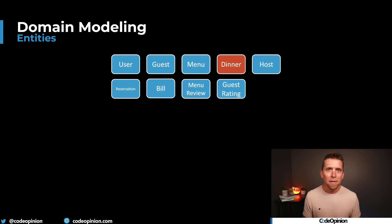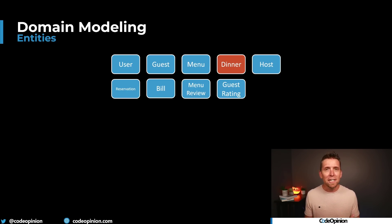Looking back at all these entities and thinking about what the actual behaviors of this system are, I would probably assume the complexity lies within hosting a dinner, having reservations, canceling reservations, etc. — and that may be where defining an aggregate could be appropriate. But without actually defining the behaviors, I don't really know. The behaviors that you're exposing are what determine the data you're going to encapsulate within your entities and aggregates, not the other way around. If you're focusing on data structures, you'll likely end up building behaviors that are just about relationships. Would you like to see how I would design this by defining the behaviors first? I'm going to create a follow-up video doing exactly that.